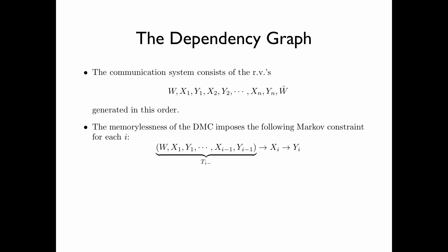The memorylessness of the DMC imposes the following Markov constraint for each i: given Xi, Yi is independent of all the random variables generated before Xi — that is, W, X1, Y1, all the way to Xi-1, Yi-1.